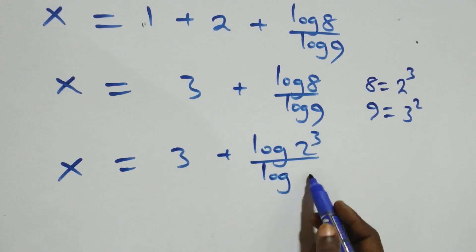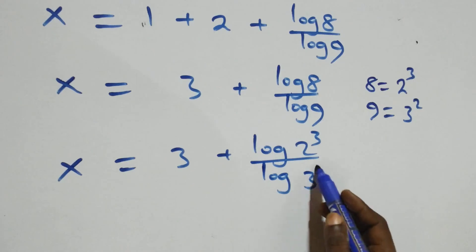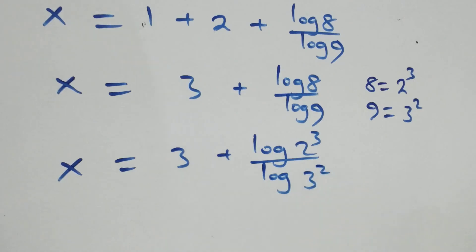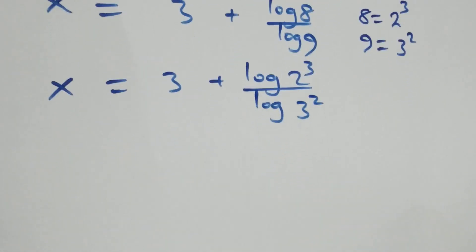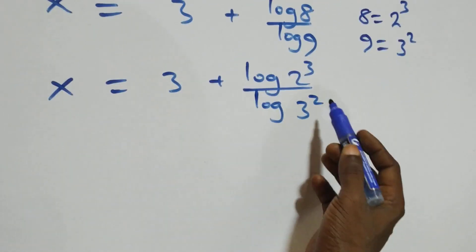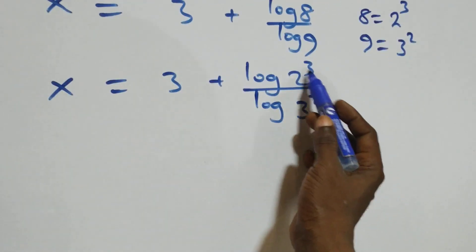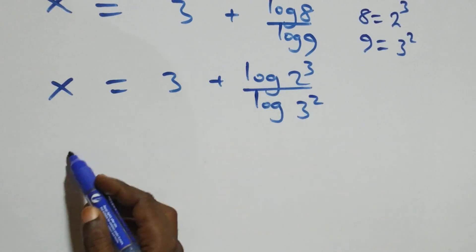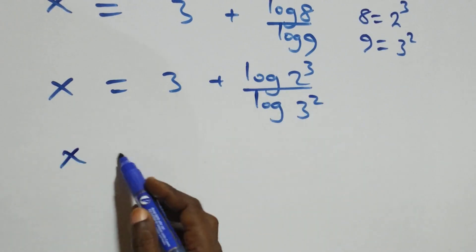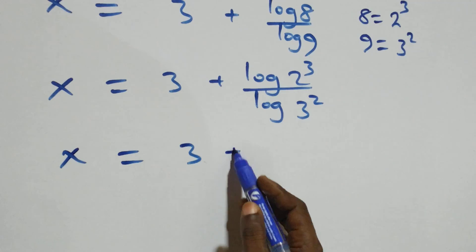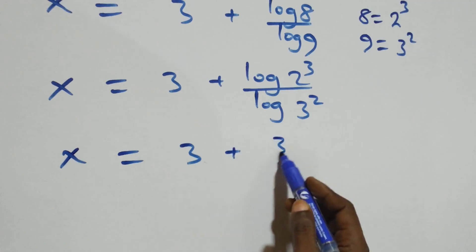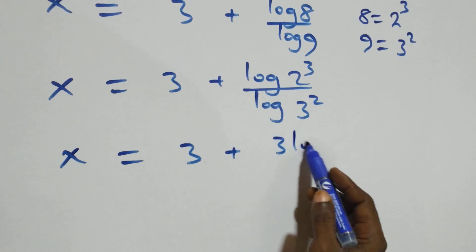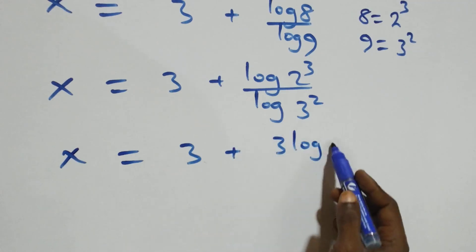We apply the power rule: the 3 from log 2³ and the 2 from log 3² come down, giving x equals (3 + 3·log 2) over (2·log 3).